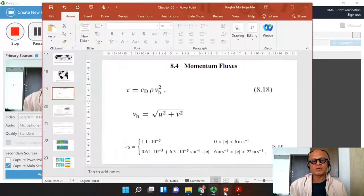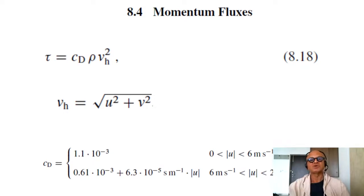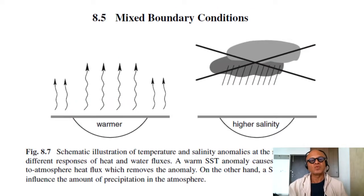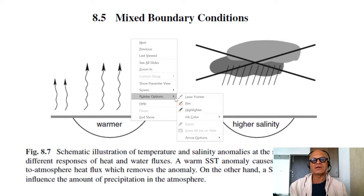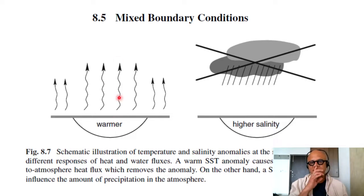Let's add one more point about forcing ocean models with fluxes, or forcing atmospheric models with fluxes, since atmosphere-only models will need boundary conditions at the bottom as well. So we end up talking about what are called mixed boundary conditions, based on the differences in the heat and freshwater flux forcing of the ocean and the resulting changes in the ocean. A warm SST anomaly causes an increased ocean-to-atmosphere heat flux, which removes the anomaly. This is very common and very typical, except there are a few places where the atmosphere is actually warmer than the ocean.